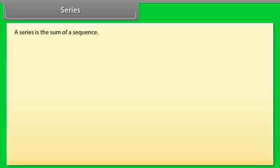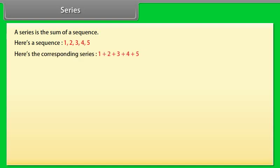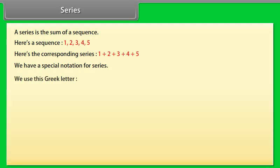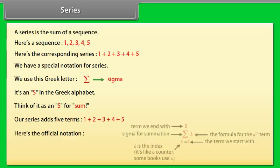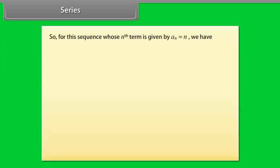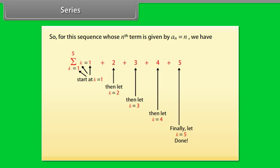A series is the sum of a sequence. Here is a sequence: 1, 2, 3, 4, 5. Here is the corresponding series: 1 + 2 + 3 + 4 + 5. We have a special notation for series — we use the Greek letter sigma, which is an S in the Greek alphabet. Think of it as an S for sum. The official notation is: summation from k = 1 to 5 of k. For this sequence whose nth term is a(n) = n, the summation is found to be 15.